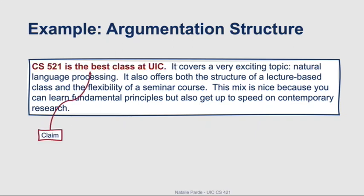There's clearly a central controversial claim in this text passage, which is that CS 521 is the best class at UIC. Many of you are probably thinking, obviously no, the best class is CS 421. So this is definitely something that could be argued against or supported.